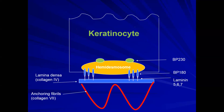Here's a rough drawing of the basement membrane zone. Your hemidesmosome holds the keratinocyte to the basement membrane, where BP230 and BP180 antigens are located, along with laminins. The lamina densa is collagen IV, and collagen VII forms the anchoring fibrils. When you do a salt split in a DIF study, you cut through collagen IV. So BP antigens — the targets for bullous pemphigoid — split to the roof of a blister, while collagen VII — the target for EBA or bullous lupus — splits to the floor.